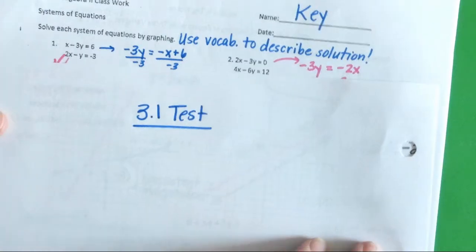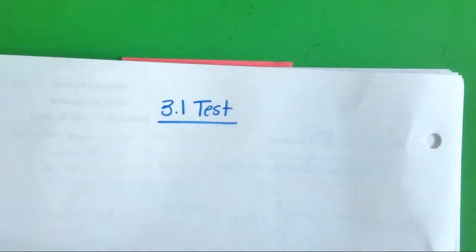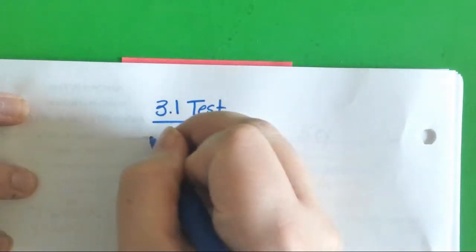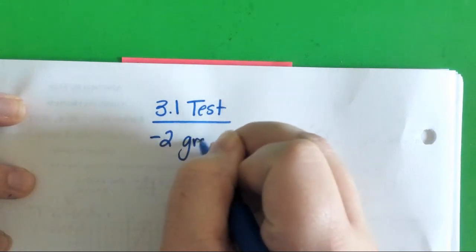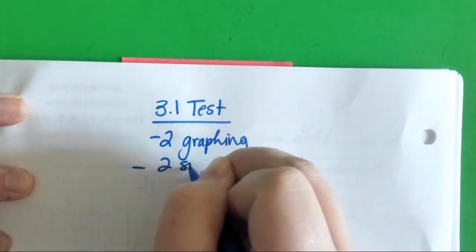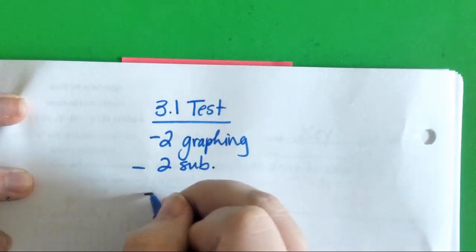The 3.1 test has 10 questions. It has 10 questions. Two are graphing. Two are substitution. Two are elimination.